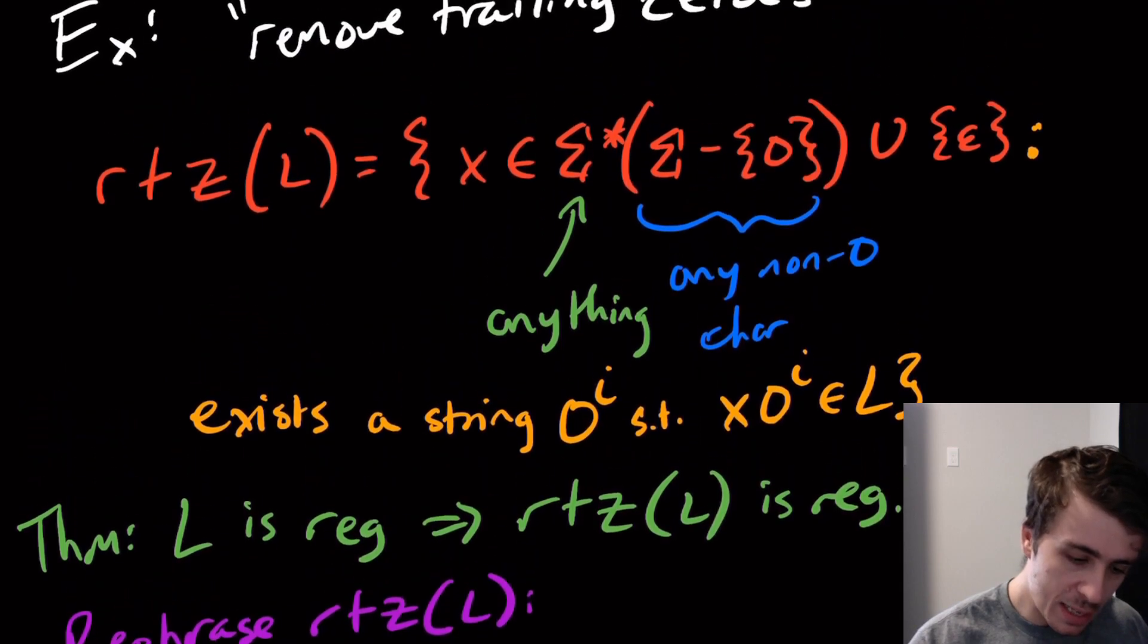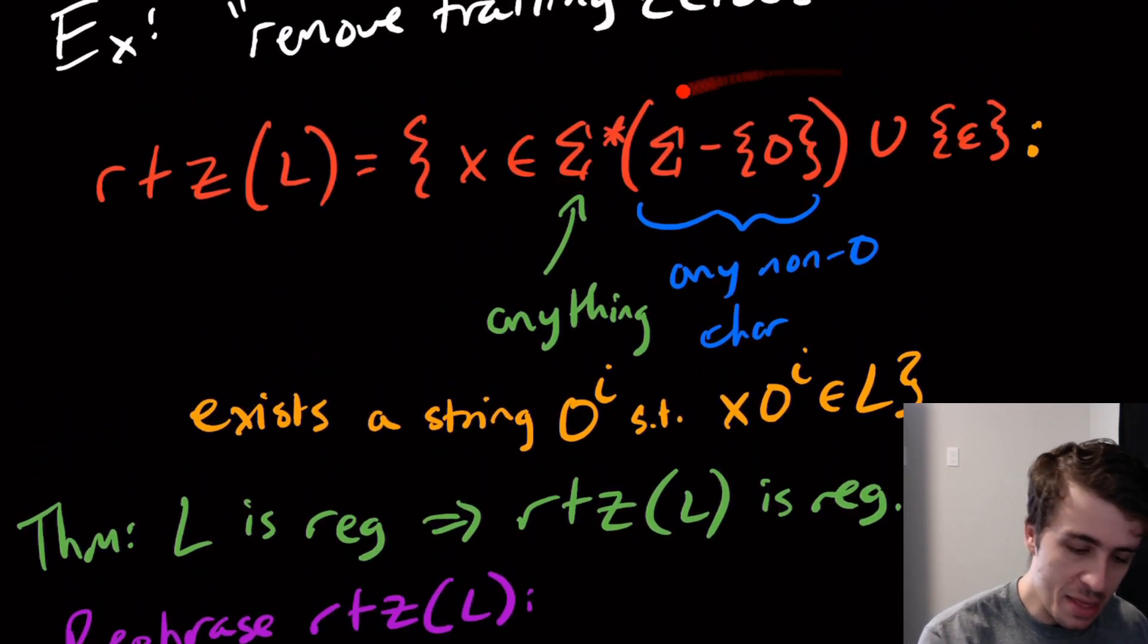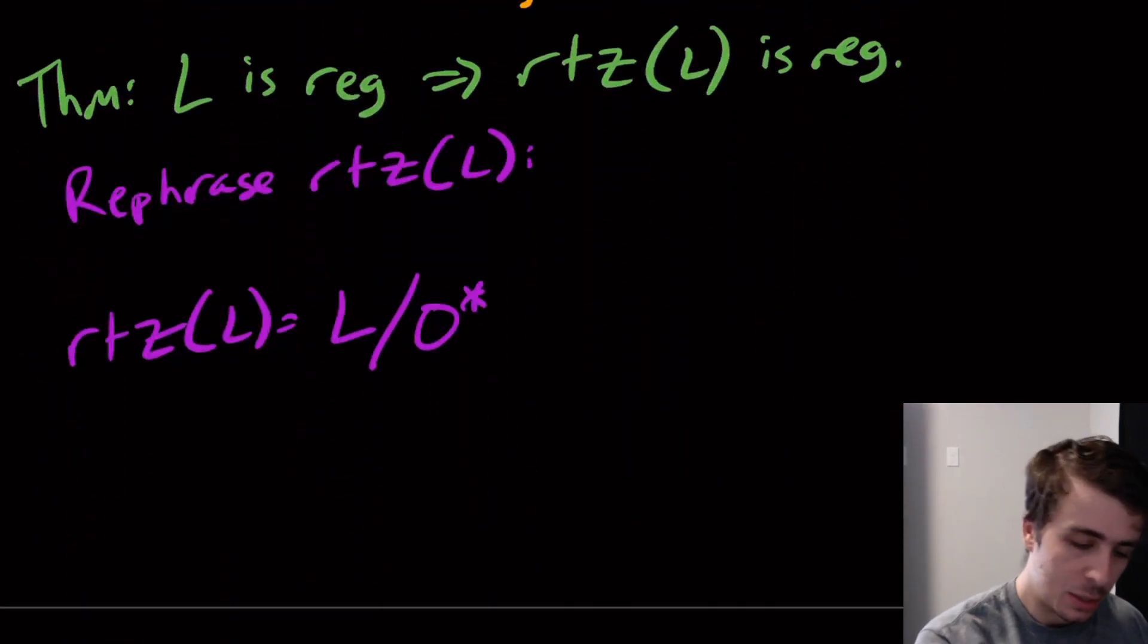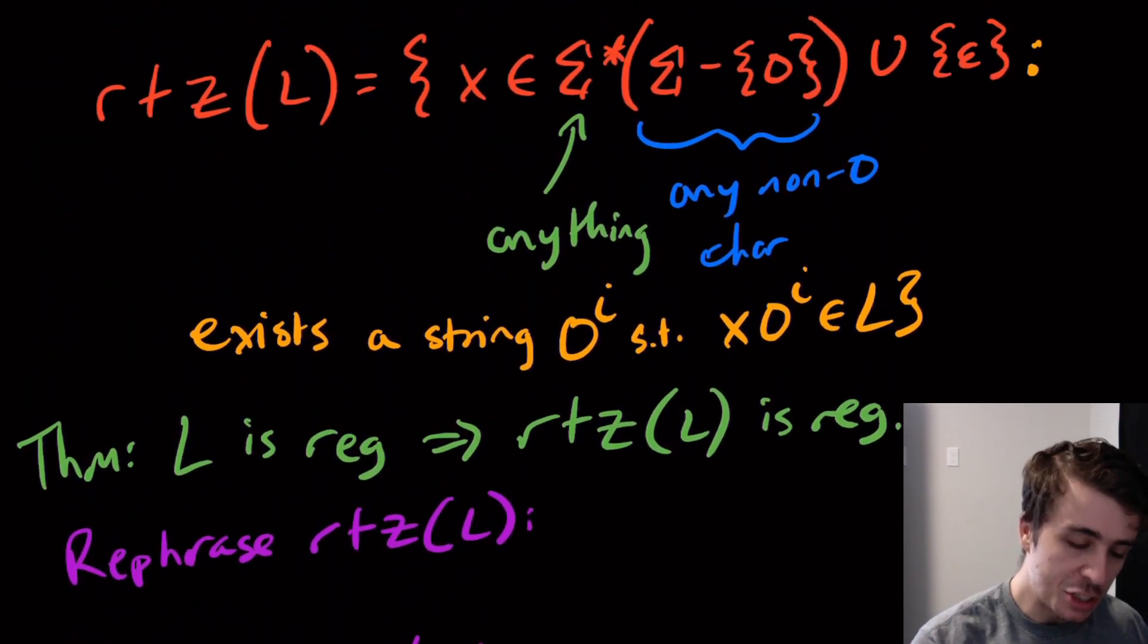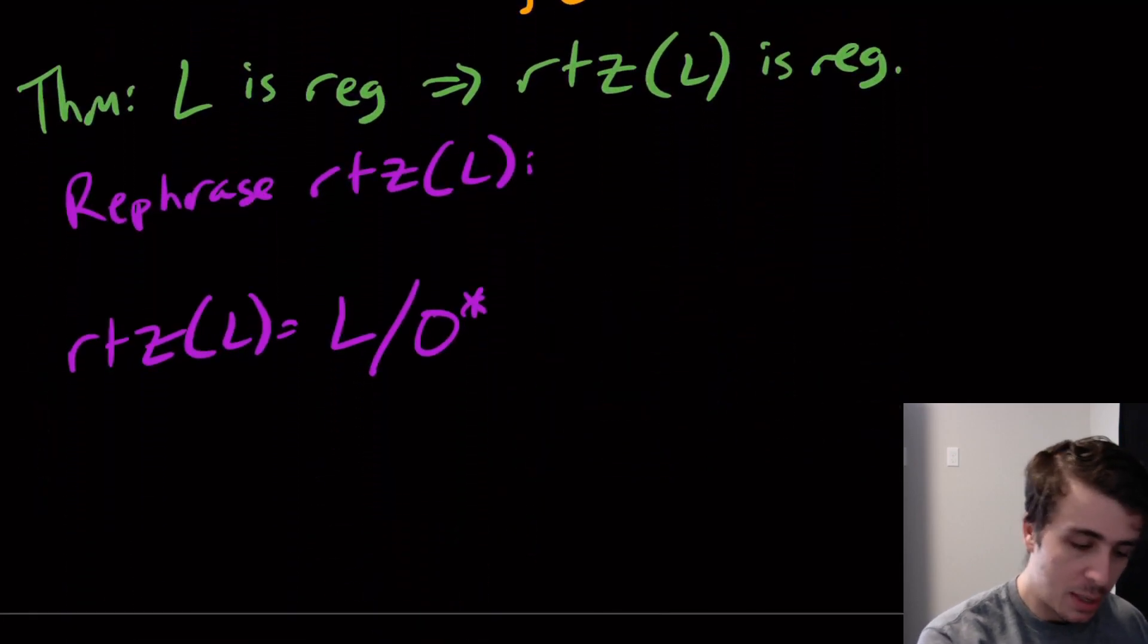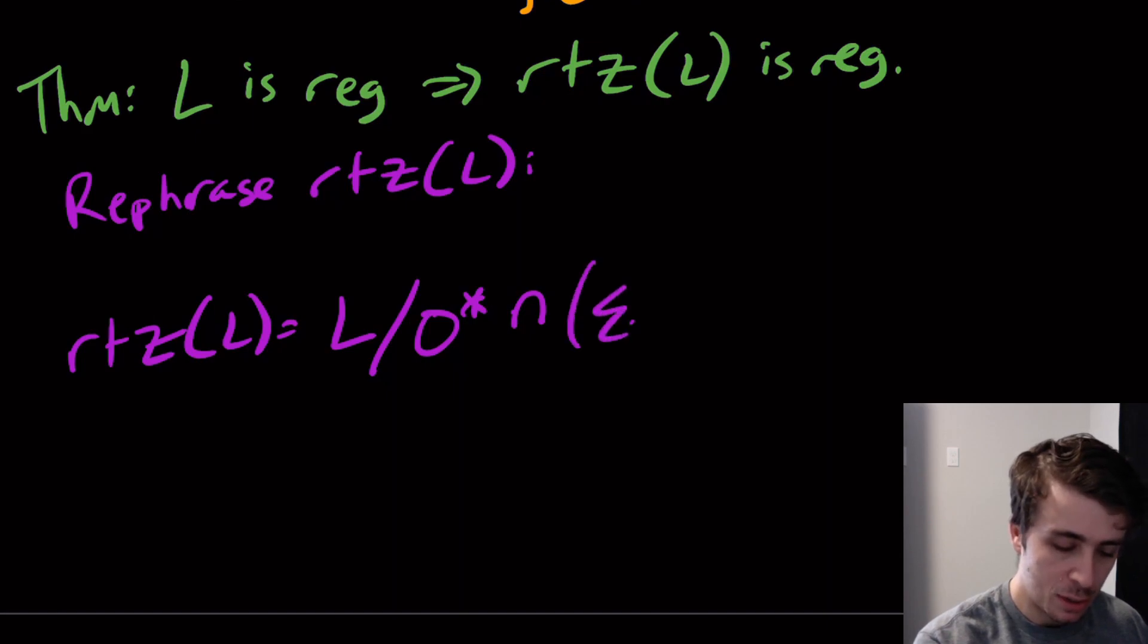I want you to put in the comments why you think that is. In fact we need to union this, oh no sorry not union, it needs to be intersected with sigma star (sigma take away the zero) and then union that with the empty string back in.